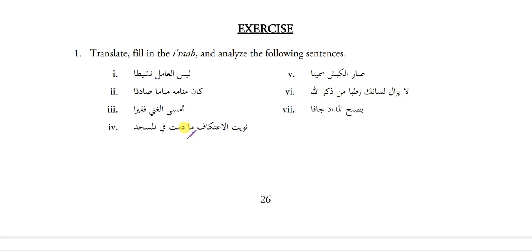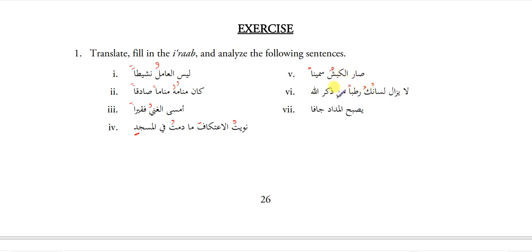Let's do this exercise. Translate, fill in Dairab and analyze the following sentences. Laisal Aamilu Nashitan. Kana Manamuhu Manaman Saadikan. Amsal Ghaniyum Faqiran. Nawaitu Al-Aitakaafa. Ma Dumtu Fil Masjidi. Saar Al-Qabshu Saminan. La Yazalu Lisanuka Ratbam Min Zikrallahi. Yusbihu Al-Midadu Jaffan.